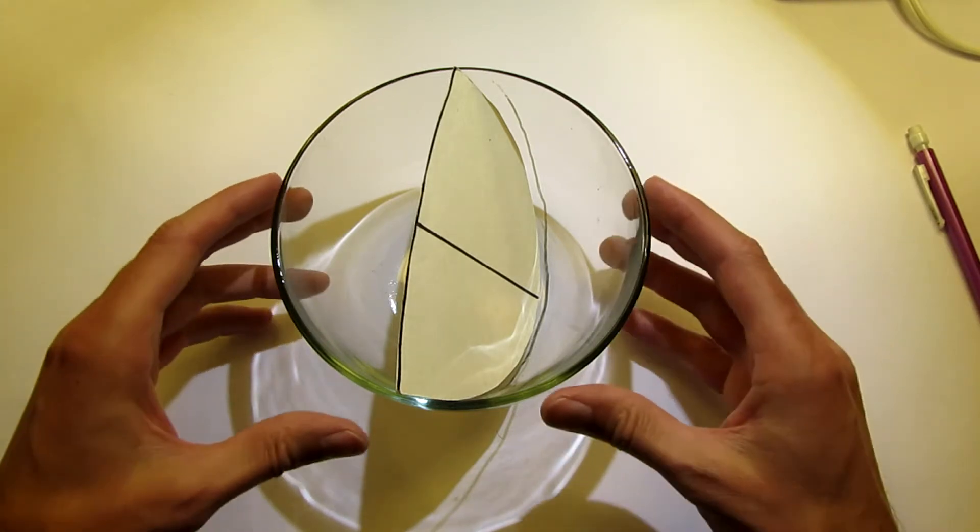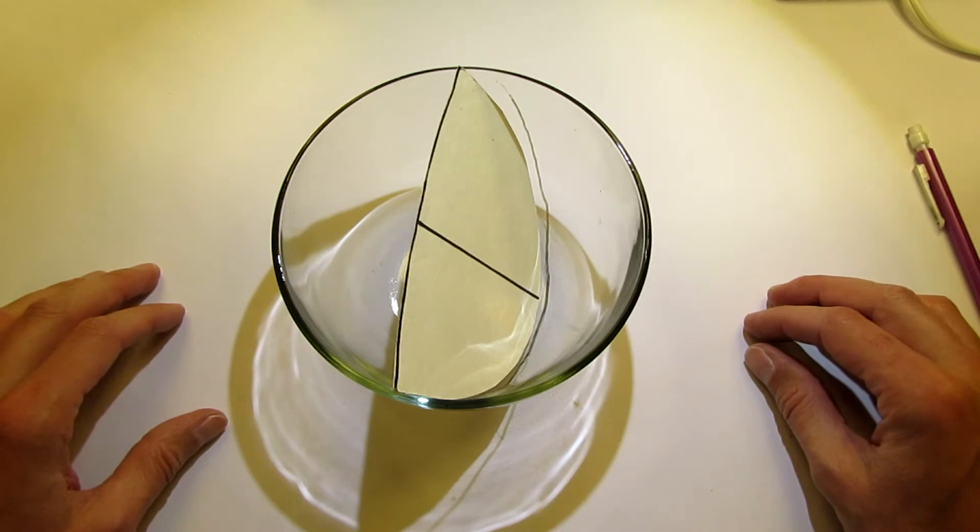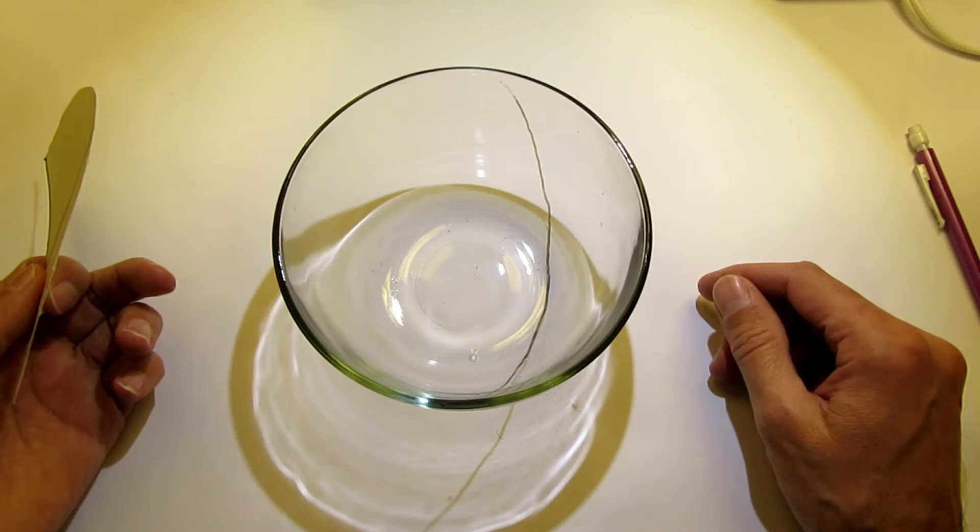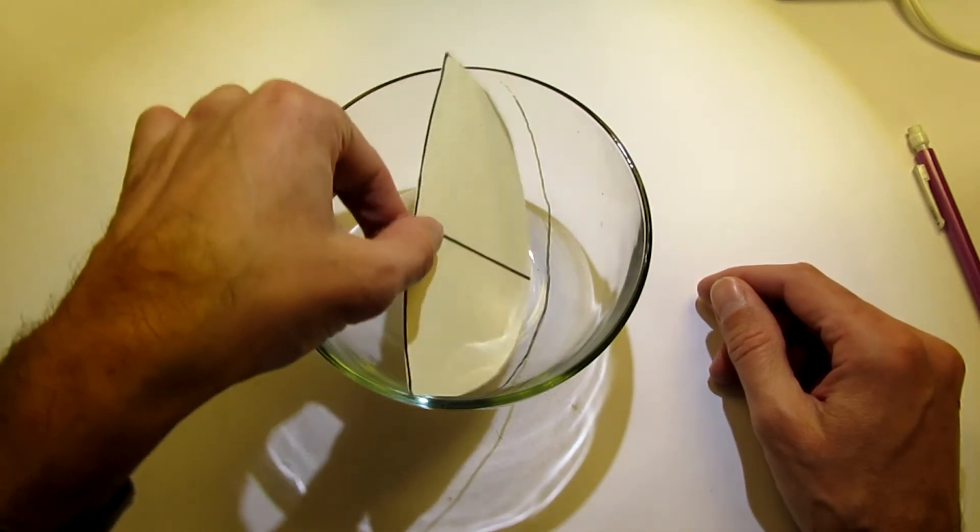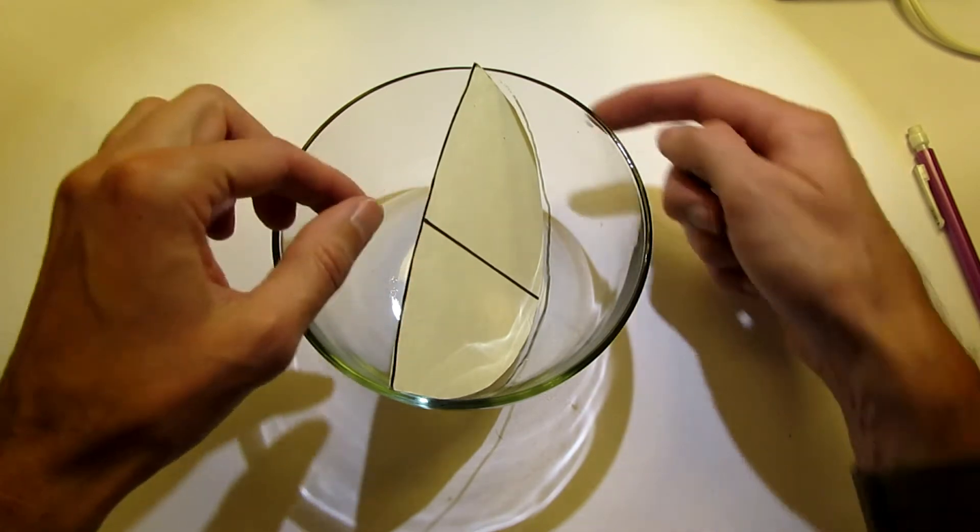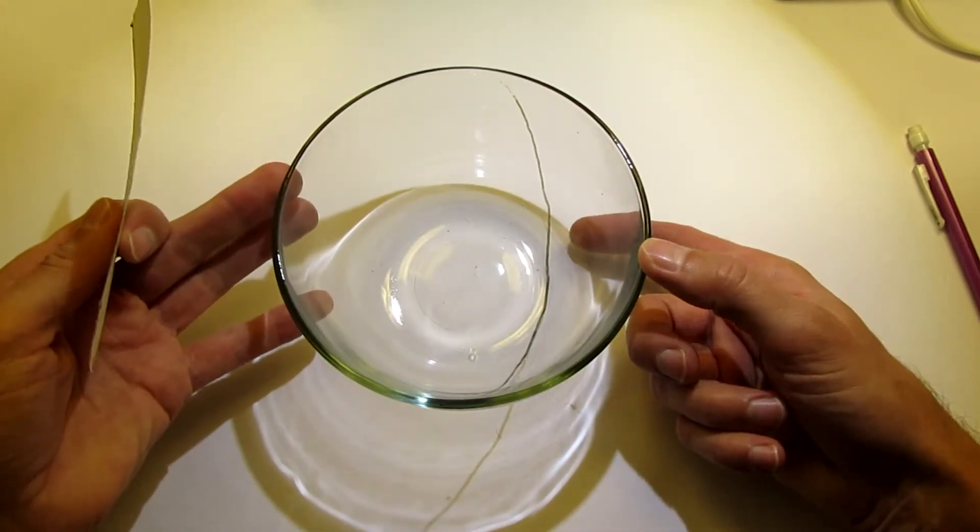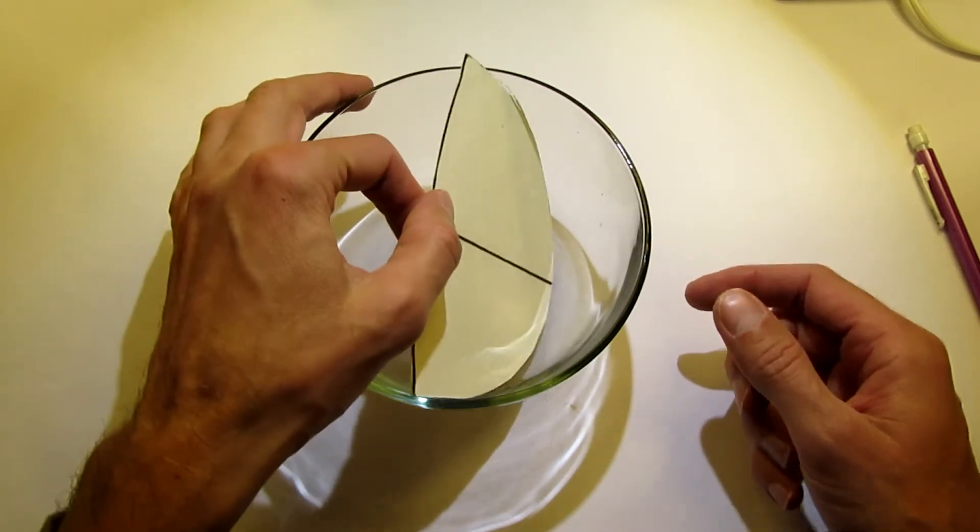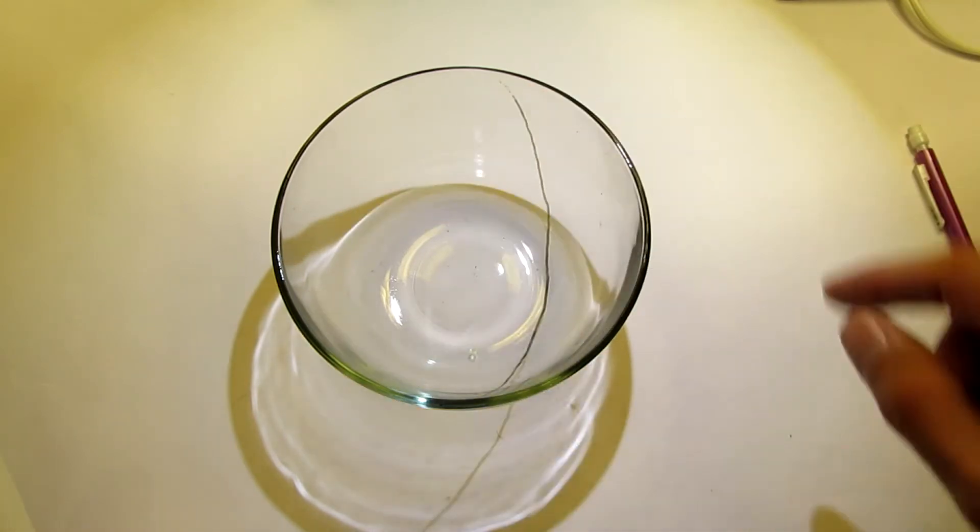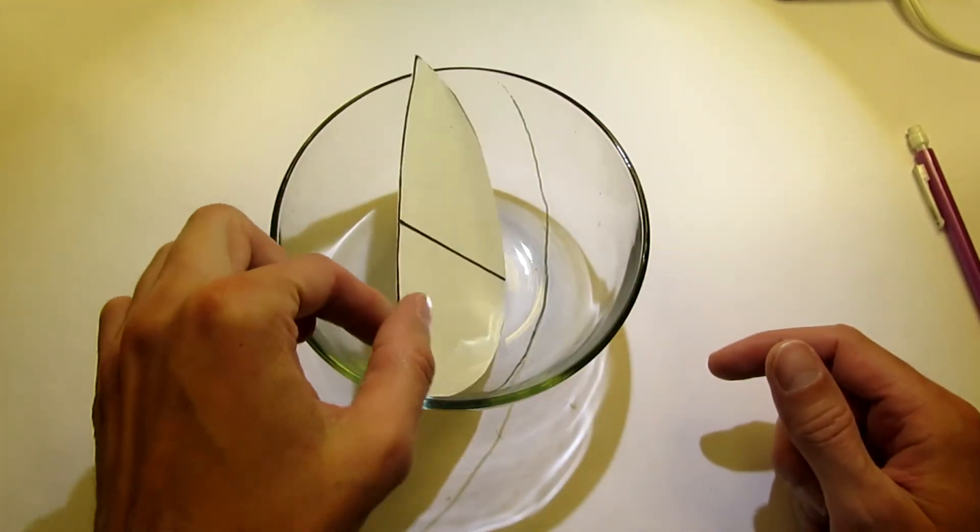To remember how a stereonet works, you can think of the stereonet as a bowl being projected down onto a piece of paper. If we put a plane running through the middle of that bowl, that plane will intersect the outside of the bowl and produce an arc if we plot it as a great circle. Of course we can plot as a pole as well. The perpendicular to that great circle would plot in the opposite quadrant that the great circle runs through.